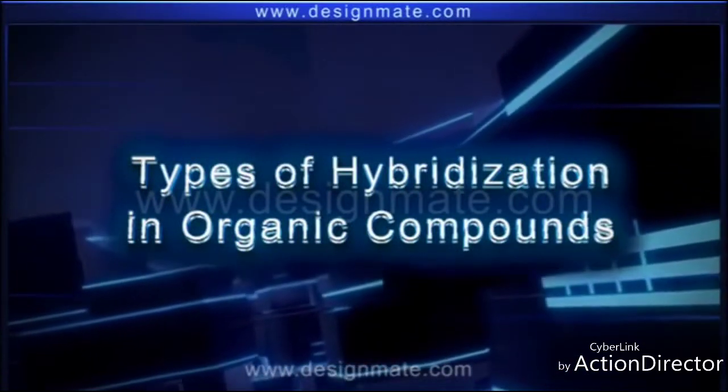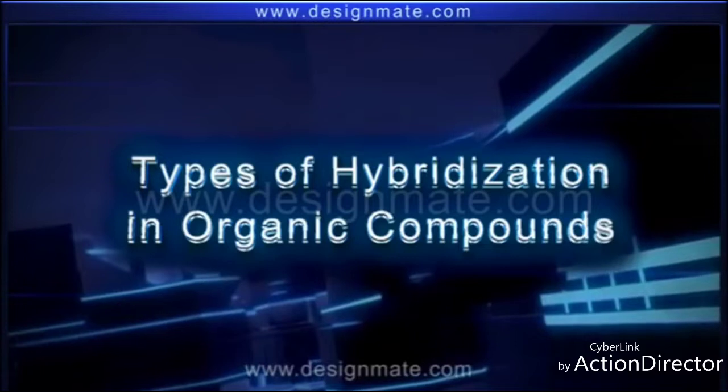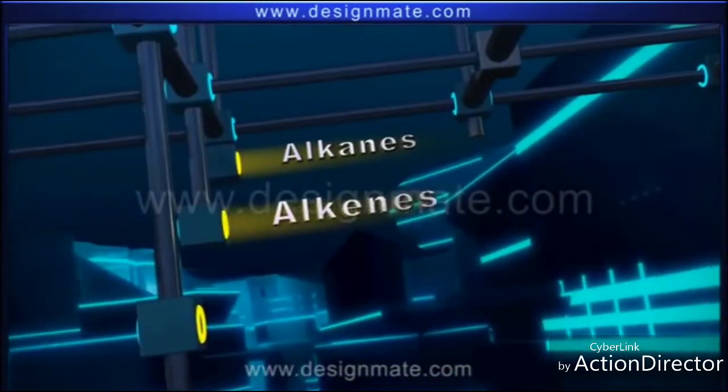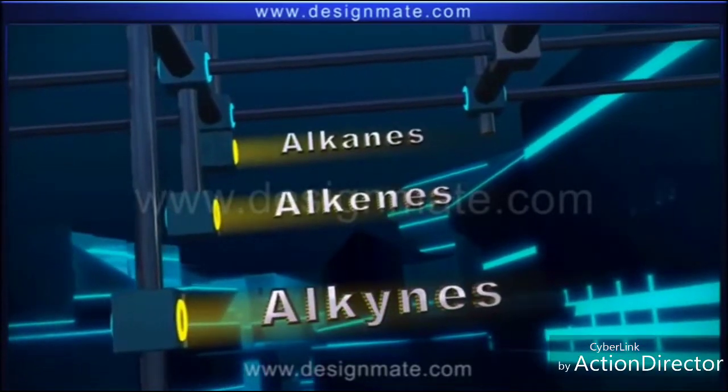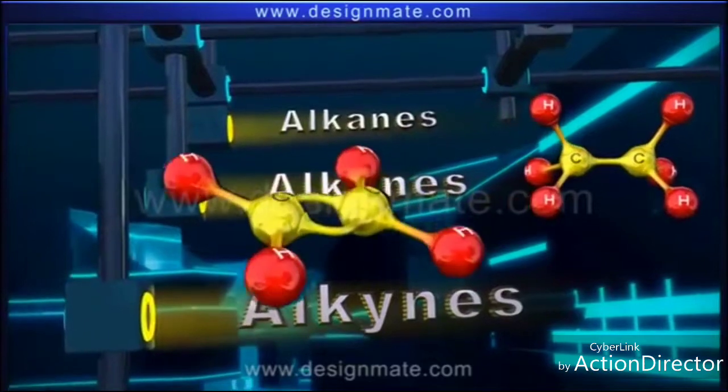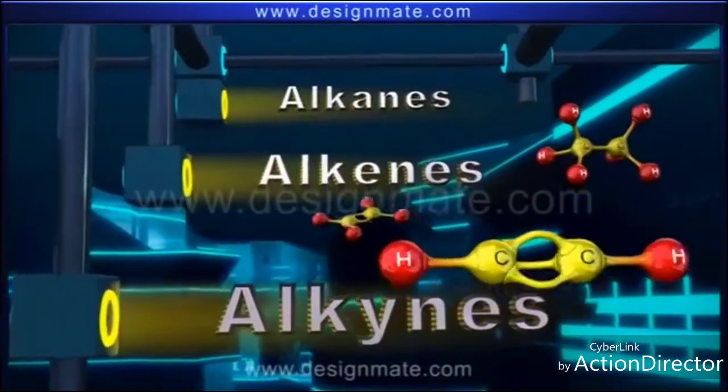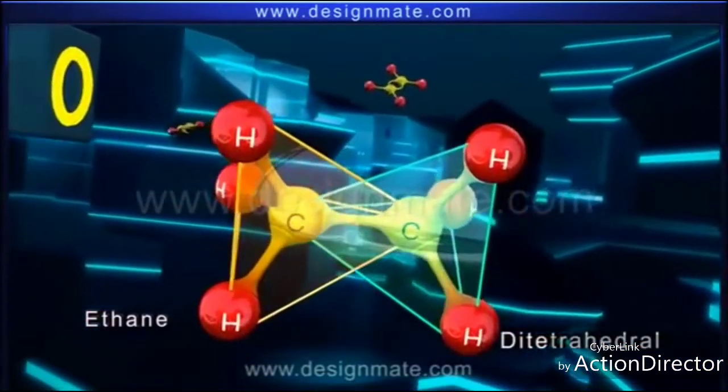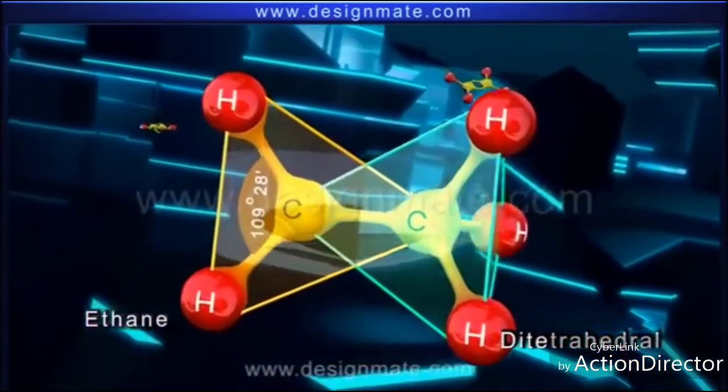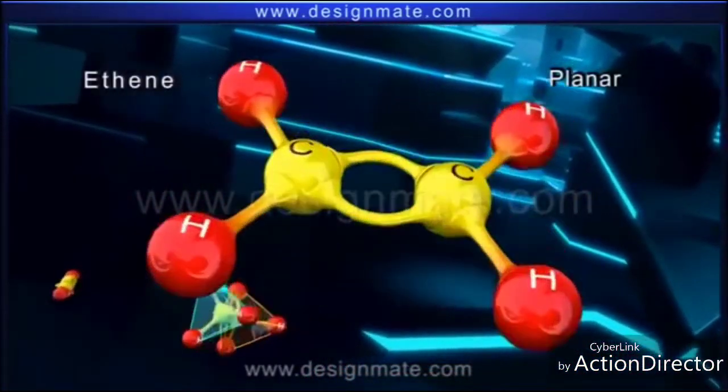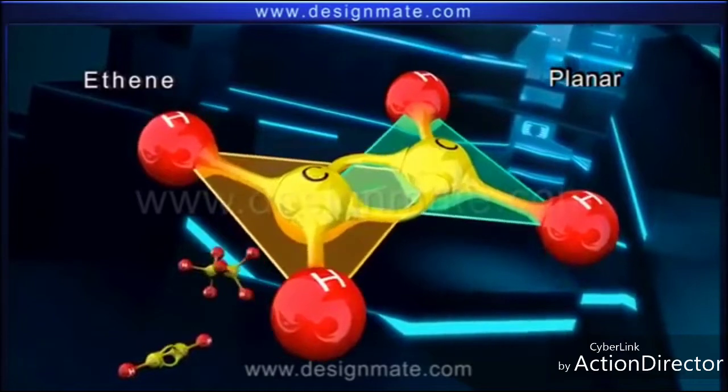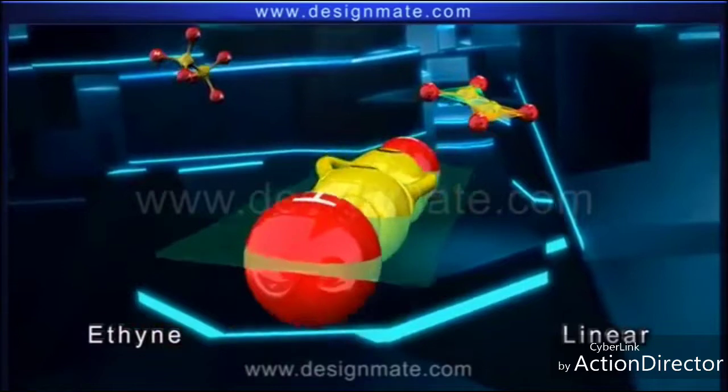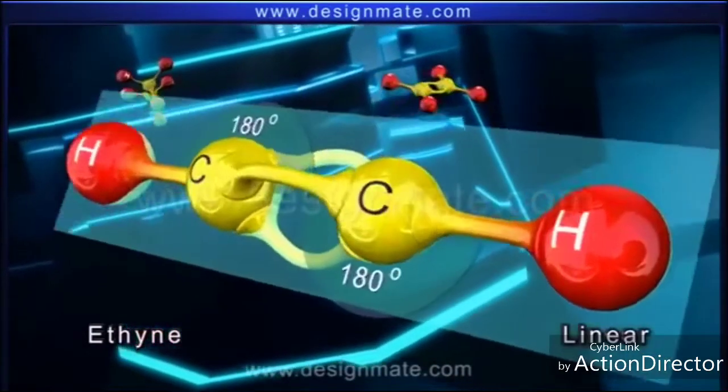Types of hybridization in organic compounds. Hydrocarbons are classified as alkanes, alkenes, and alkynes. Consider ethane, ethene, and ethyne as their respective examples. The ethane molecule is tetrahedral and has a bond angle of 109 degrees 28 minutes. Ethene is a planar molecule with a bond angle of 120 degrees, while ethyne is a linear molecule with a bond angle of 180 degrees.